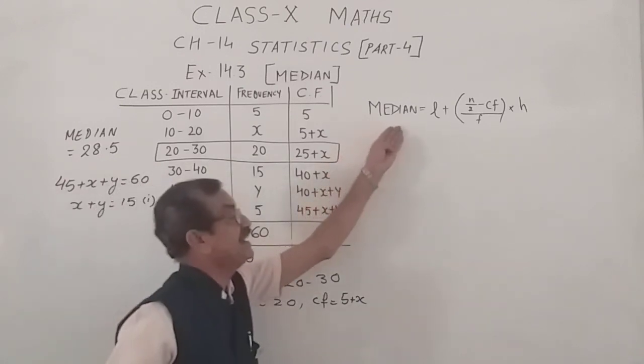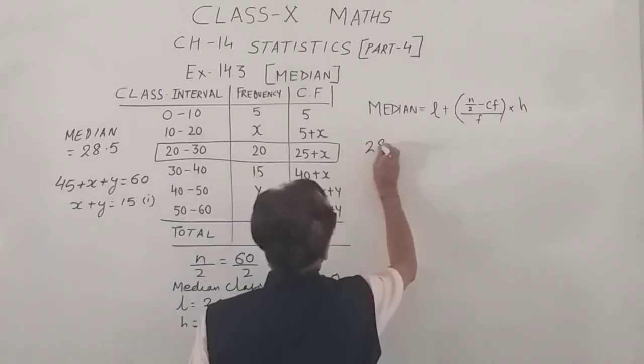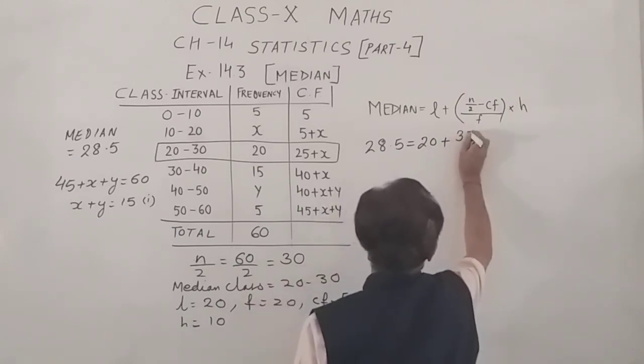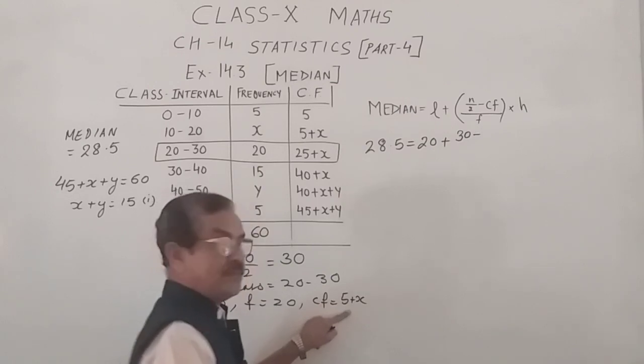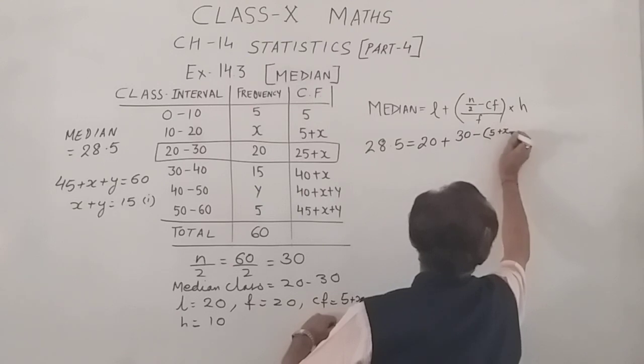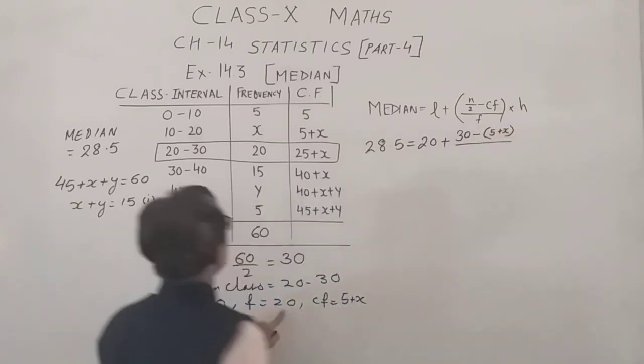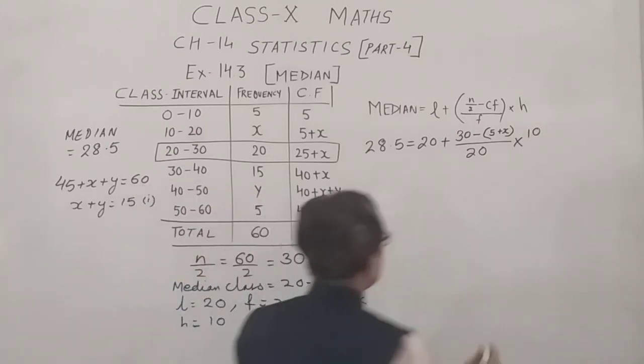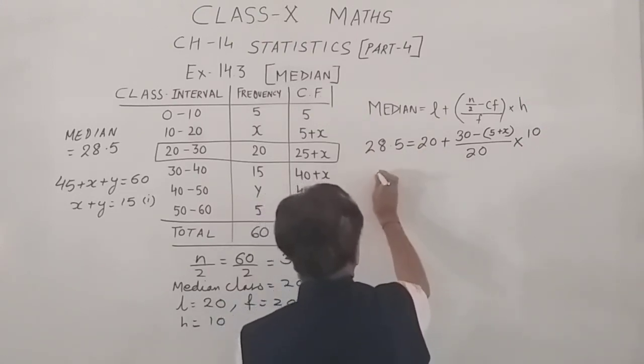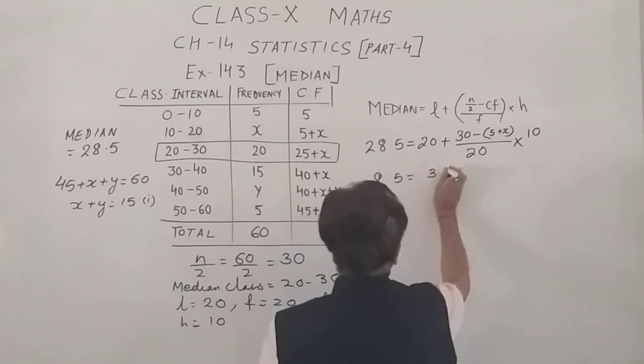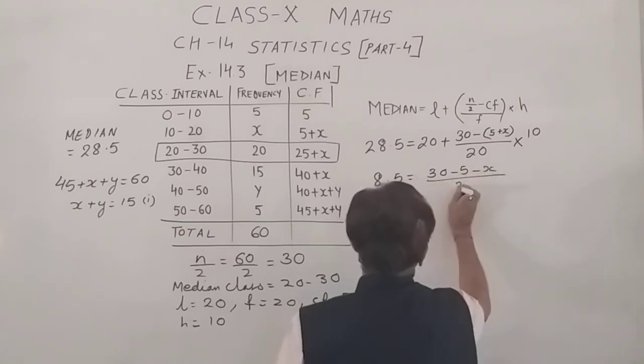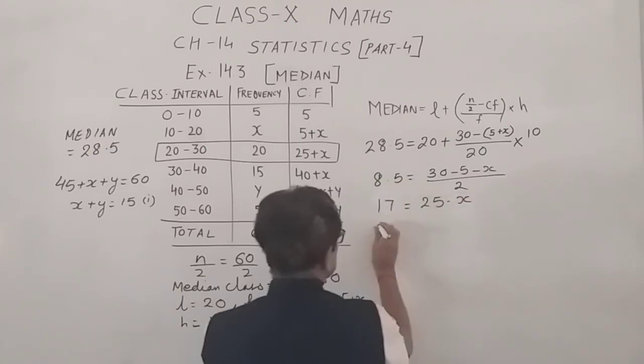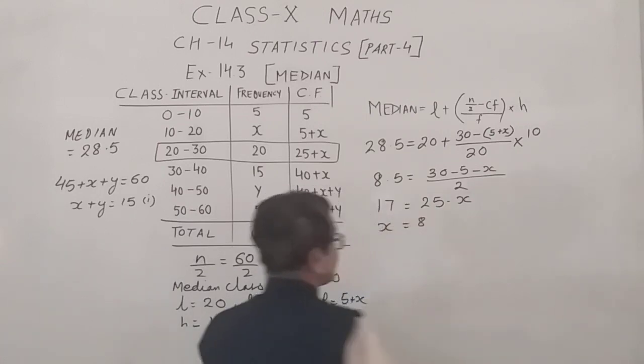Alright. Now, putting the value of the median 28.5 is equals to lower limit 20 plus n upon 2, 30 minus CF. Now, since the CF is a binomial, please write in brackets so that you do not do any kind of error in the sign. F again is 20 into height is 10. Now, here, we will cancel the 0 and 0. Transpose the 20 to the LHS to get 8.5 is equals to 30 minus 5 minus x upon 2. By cross multiplication, we get 17 is equals to 25 minus x. Transposing the x and the 17, we get x is equals to 8.